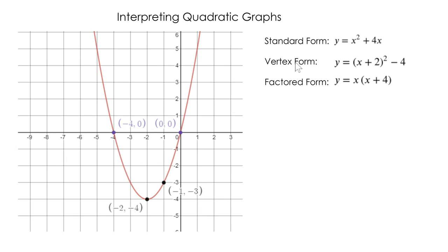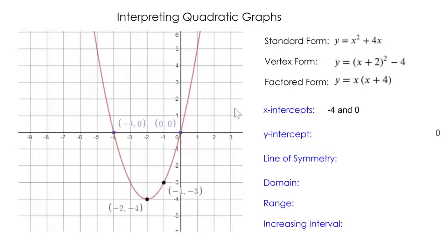If I had used my vertex form, that would be a way to check my answer. I should get the exact same standard form if I expand my vertex form. Now let's talk about all the other features of our graph. Our x-intercepts, those are easy. Where we cross the x-axis, we cross at 0 and negative 4, and I could figure that out either from my graph or from my factored form. Our y-intercept, we will only ever have one of those. I cross at 0, so my y-intercept is 0.